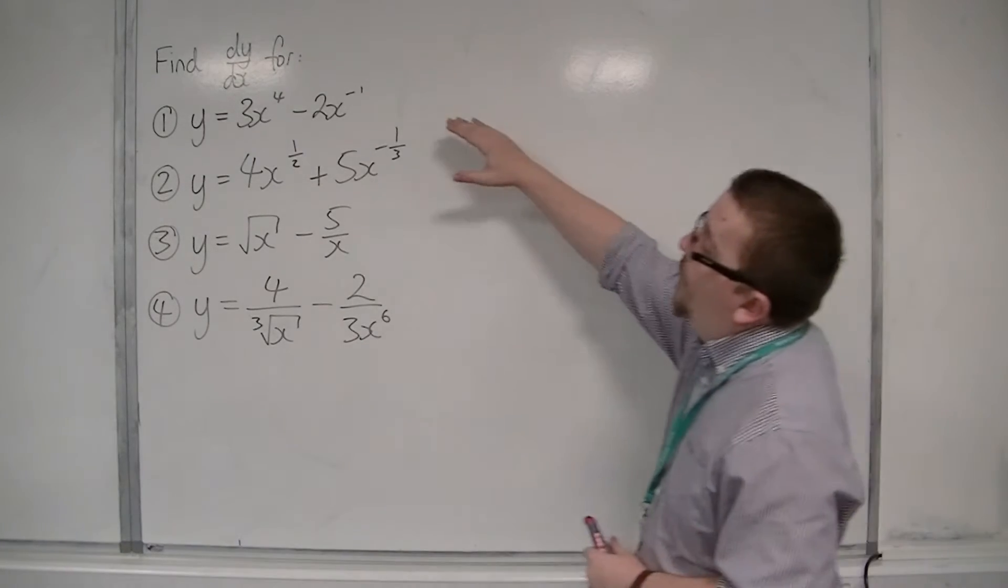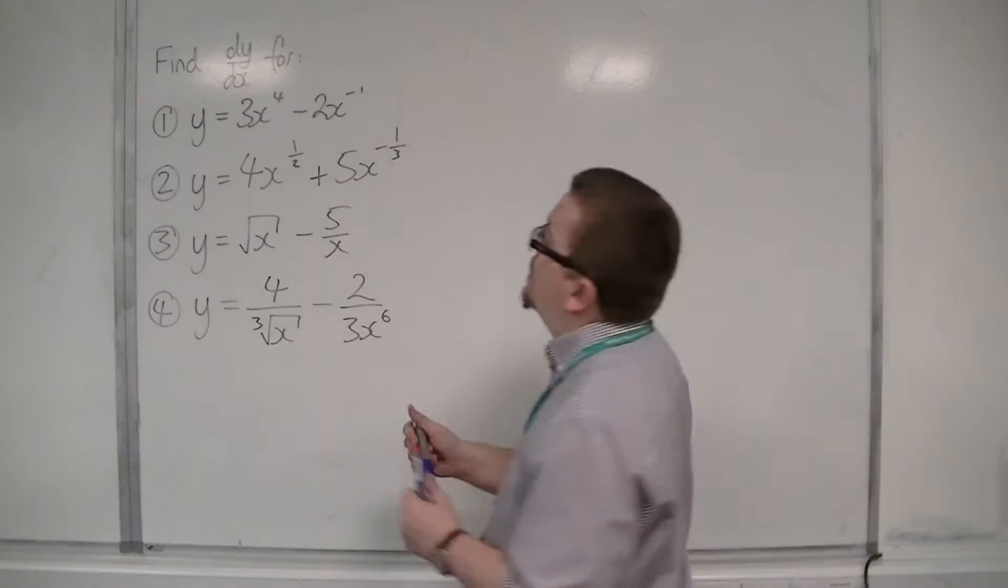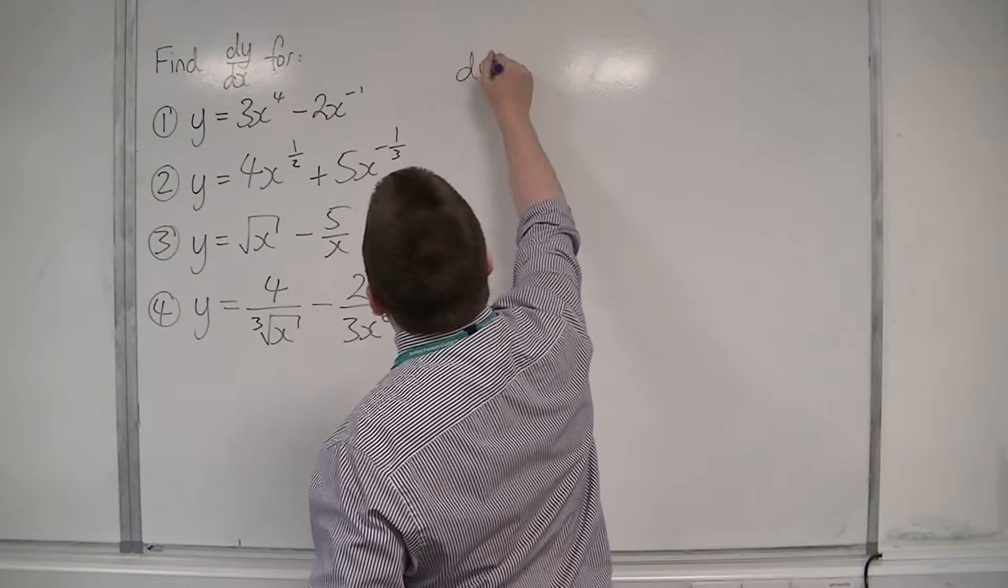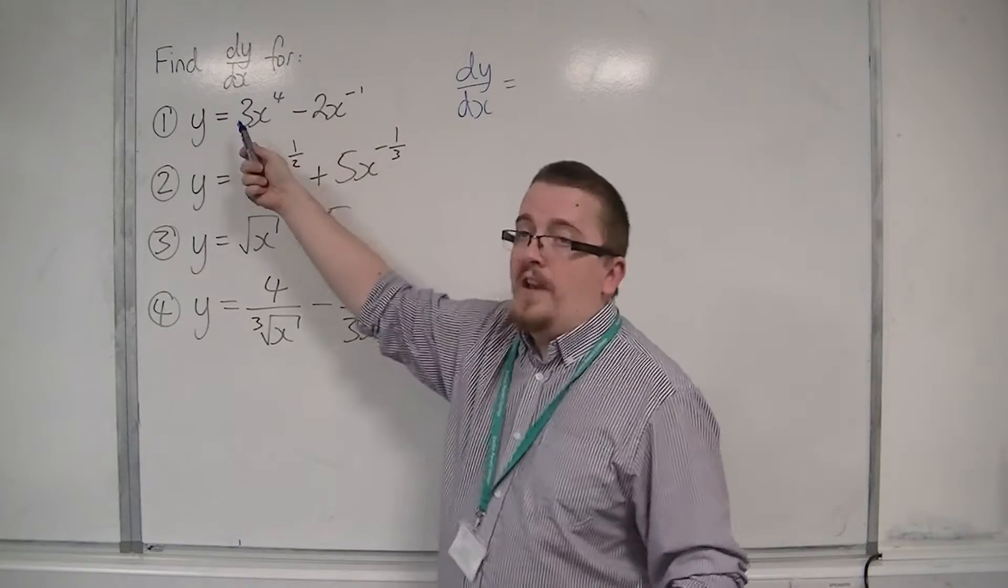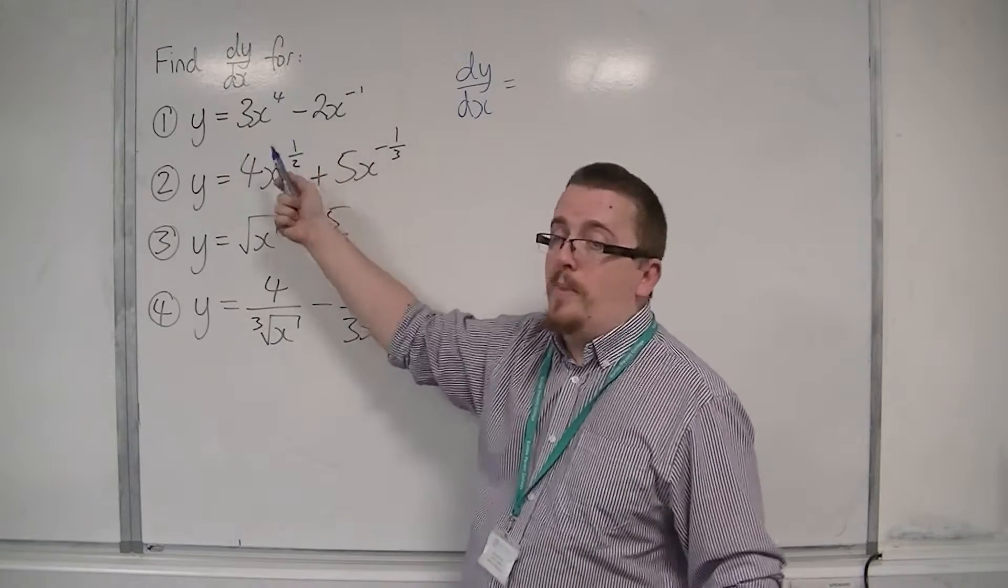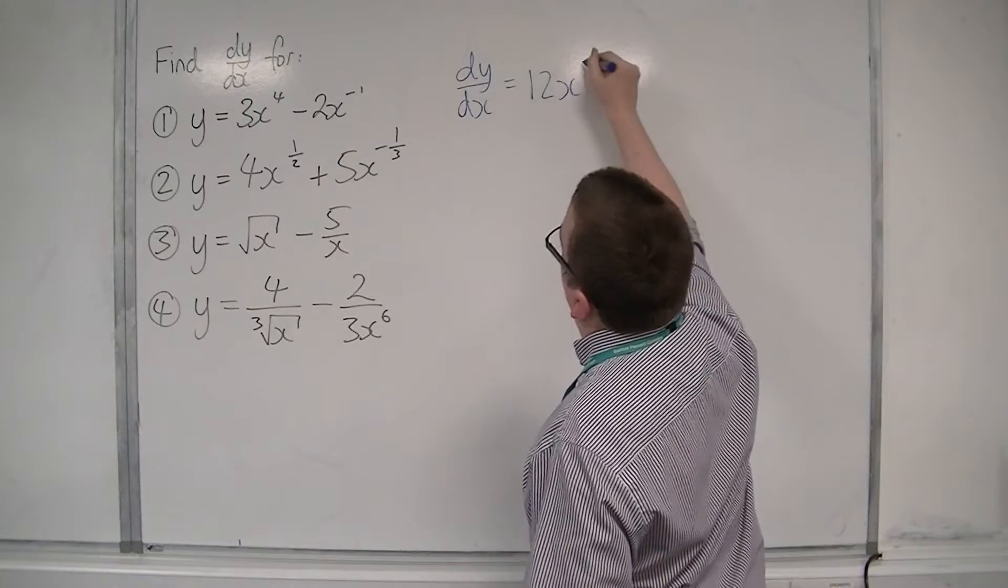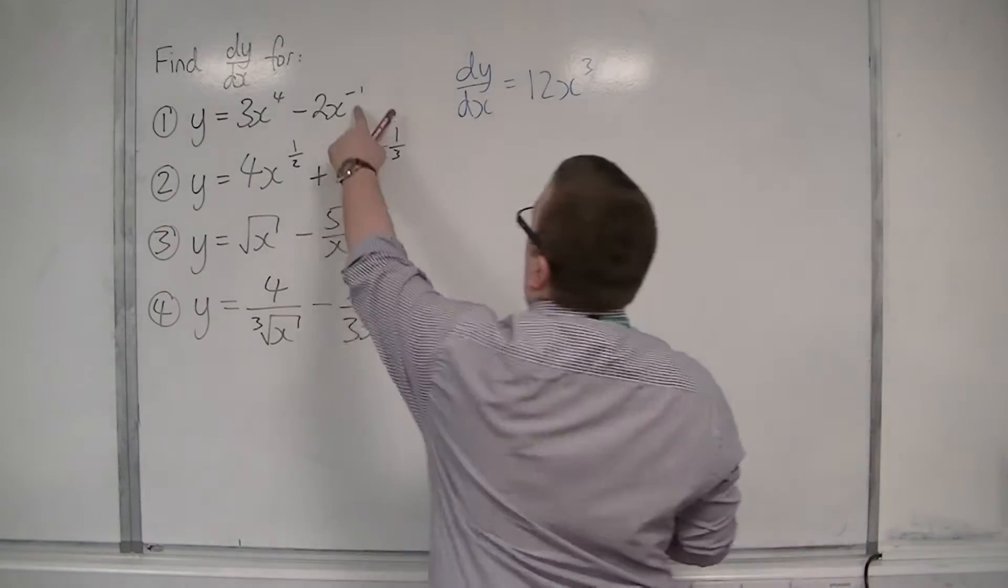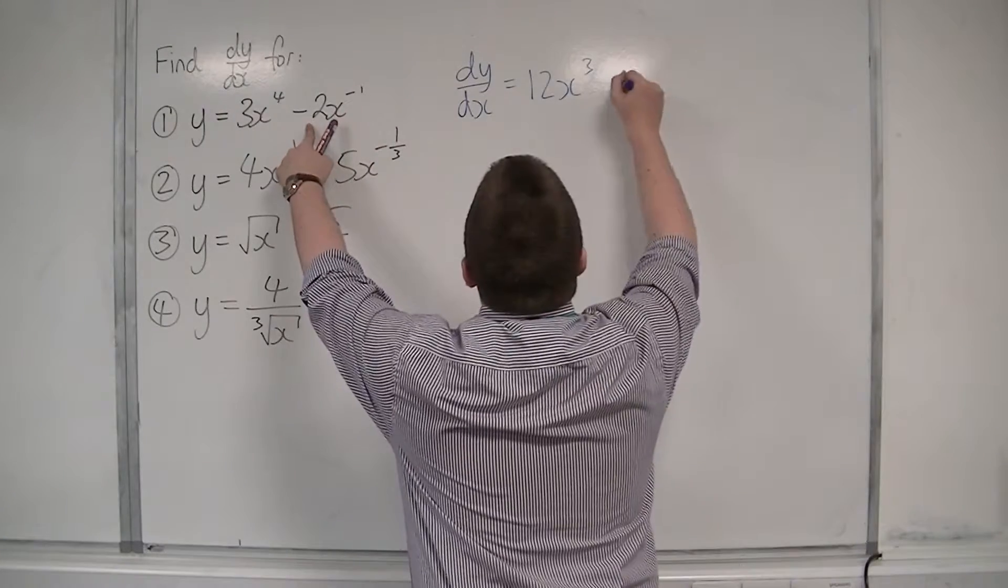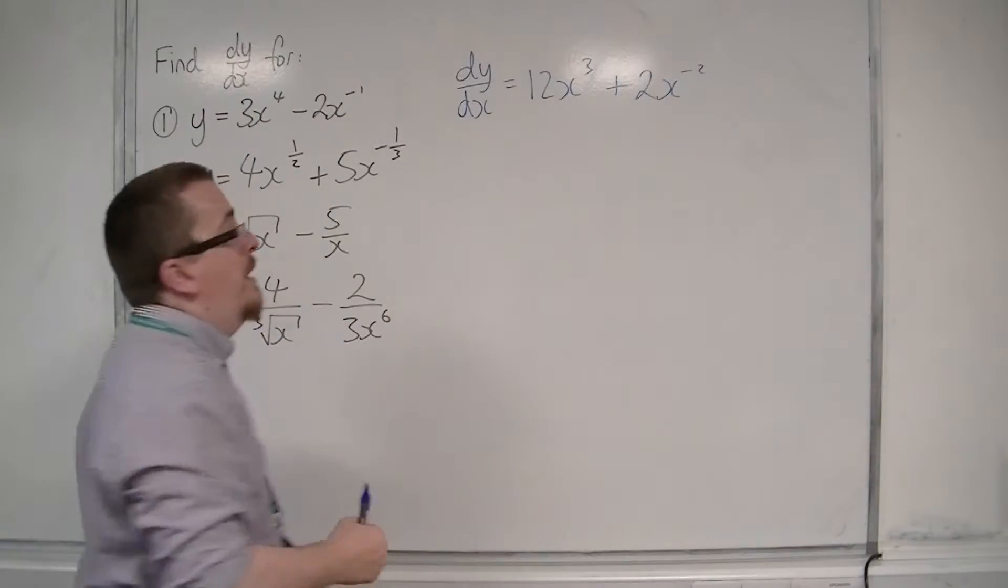This first one, y is equal to 3x to the 4 minus 2x to the minus 1. So dy by dx, the 4 comes down to the front and we take 1 off the power. So 4 times 3 is 12, take 1 off the power, so we have 12x cubed. The minus 1 is going to come down to the front and become plus 2 and then take 1 off the power. So x to the minus 2 now.